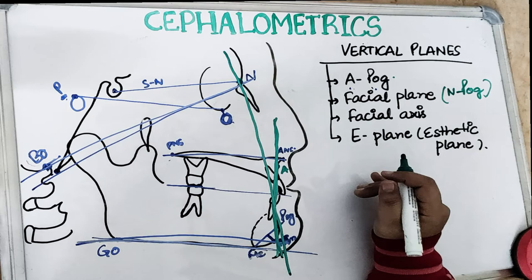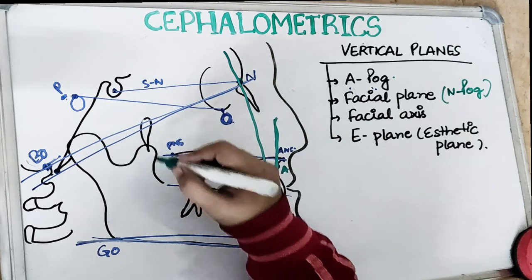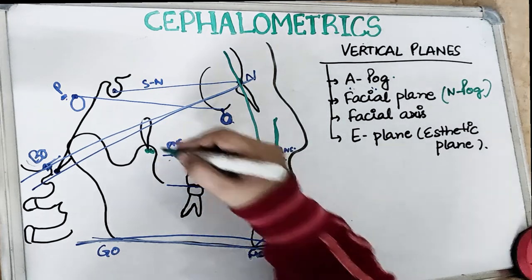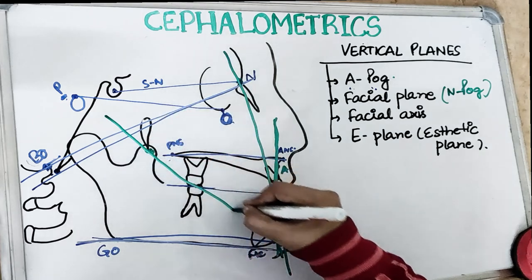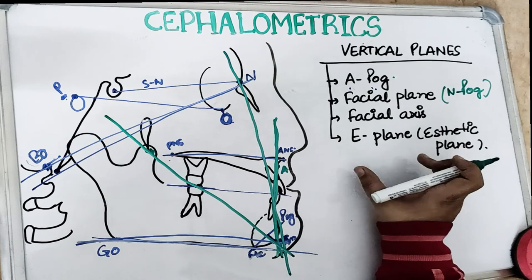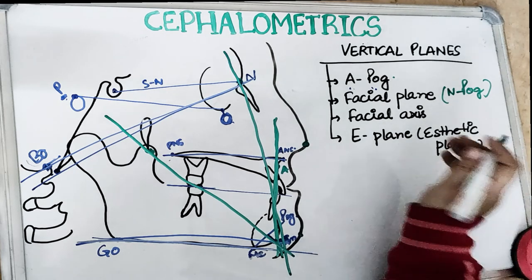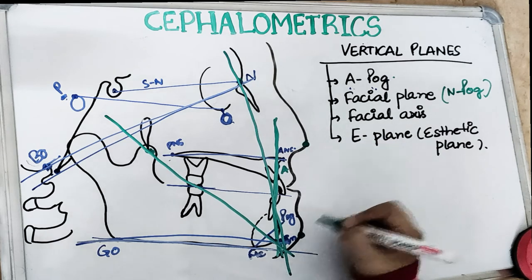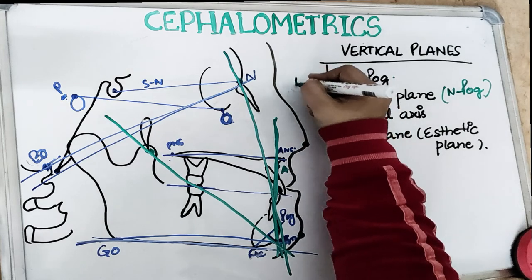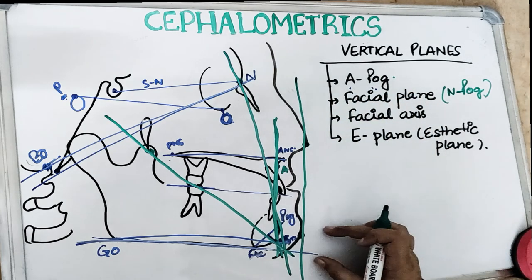The third vertical plane is the facial axis, which is somewhat oblique. It runs from the PTM point — the pterygomaxillary fissure — to gnathion. The fourth vertical plane is the E-plane, also called the soft tissue line or aesthetic line. It is a line connecting the most anterior point on the chin to the most anterior point on the tip of the nose — so a soft tissue line drawn from the tip of the nose to the tip of the chin.